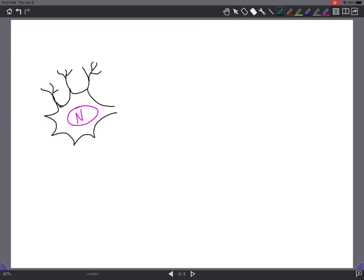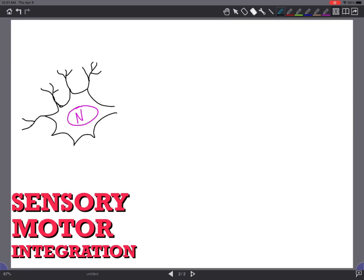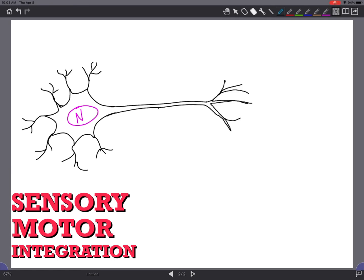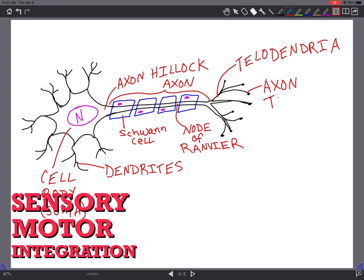The functions of the nervous system can be divided into three parts: sensory, motor, and integrative. The sensory function senses changes through sensory receptors — for example, sensory neurons give us information about vision and hearing. The motor function responds to any stimuli — for example, motor neurons control voluntary movement. The integrative function analyzes incoming sensory information, stores some aspects, and makes decisions regarding appropriate behaviors.